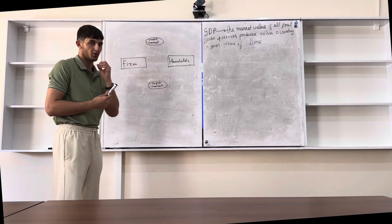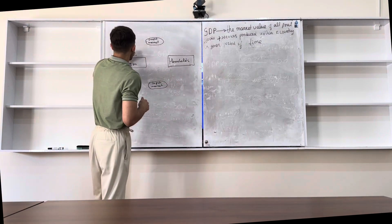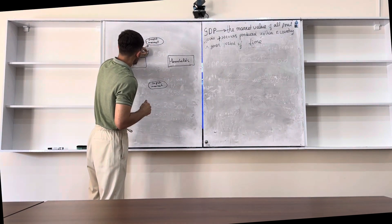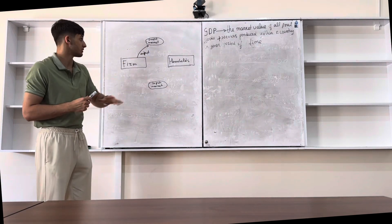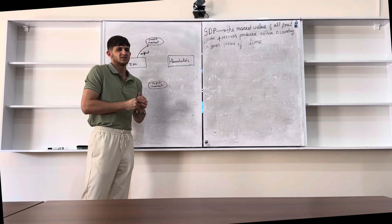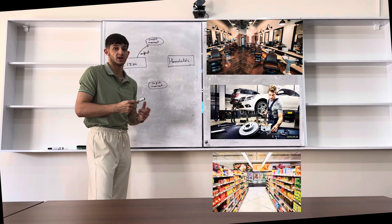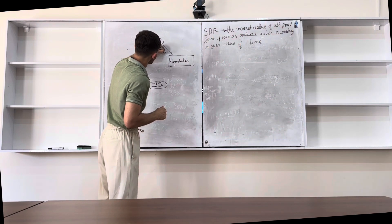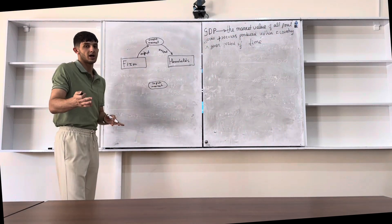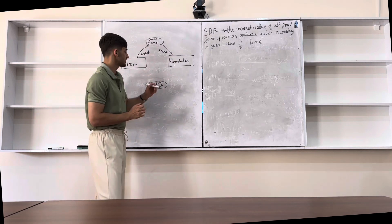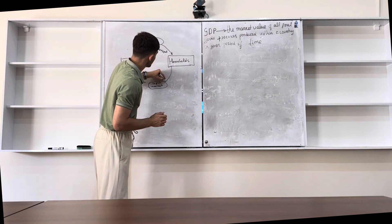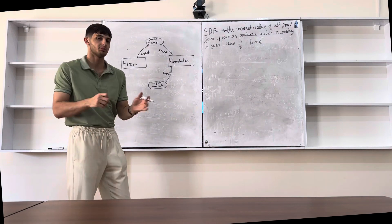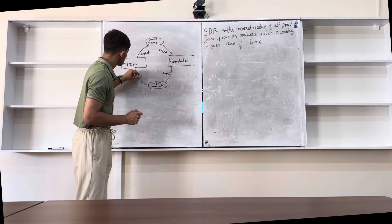Let's start with the first one. Firms sell goods and services — this is called output. And households buy this output, receiving goods and services in the economy. This is also output. Then households sell land, labor, and capital to the input market — we call this input. And firms buy this land, labor, and capital from the input market. This is input.